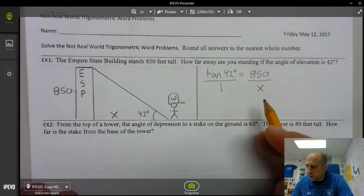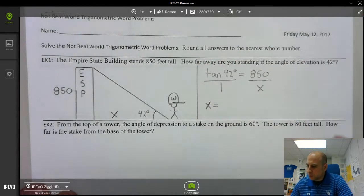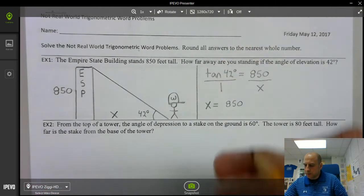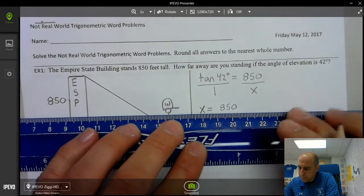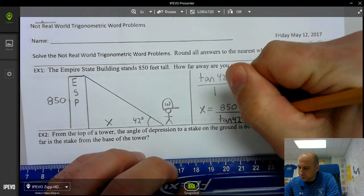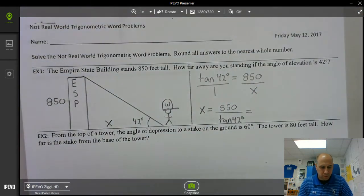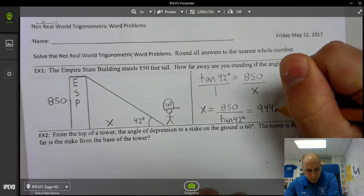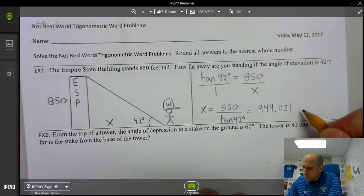Alright you cross multiply and divide so you get x equals 850 divided by tangent of 42 degrees which is 944.021 feet.